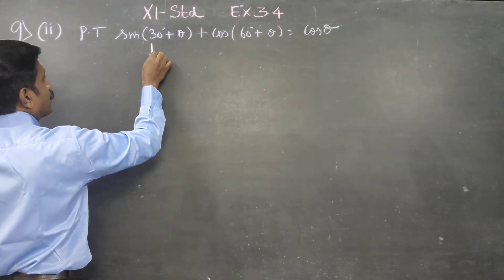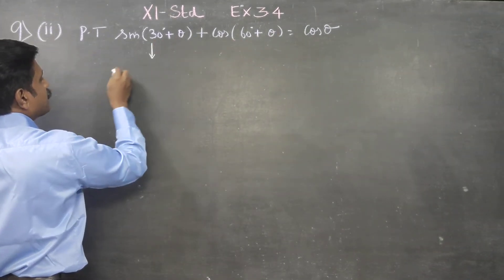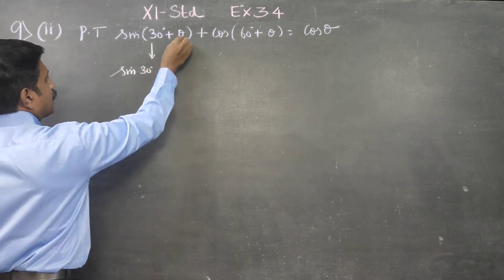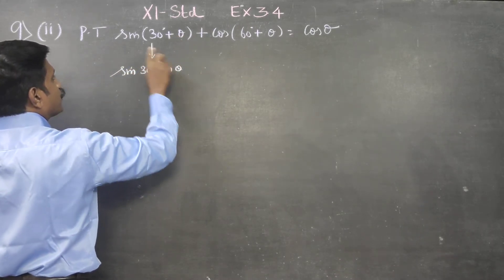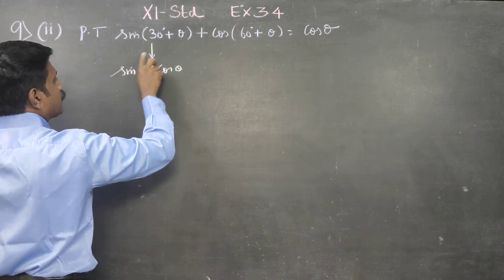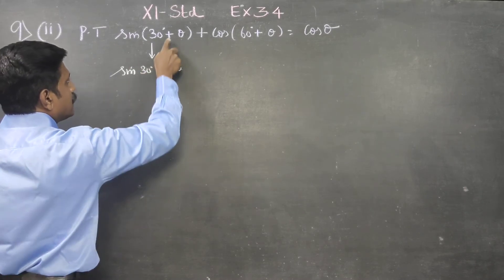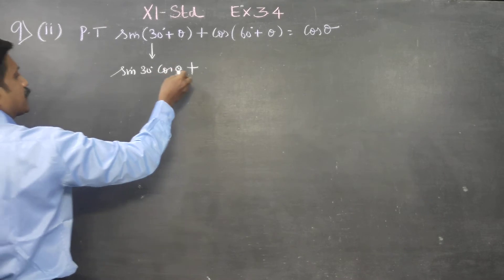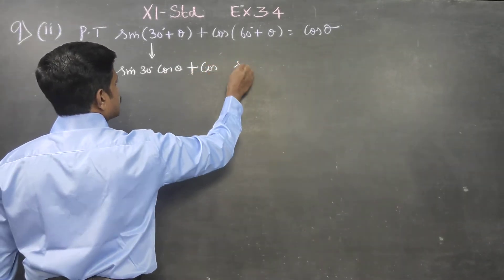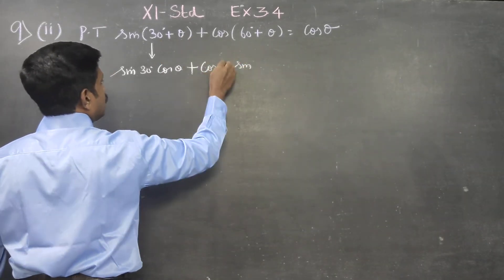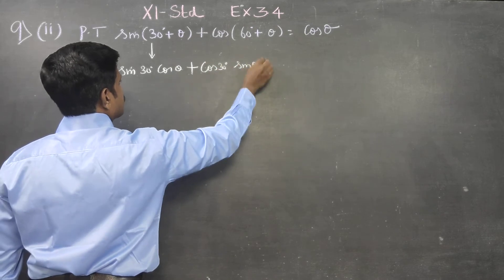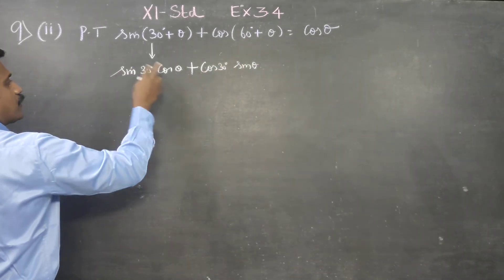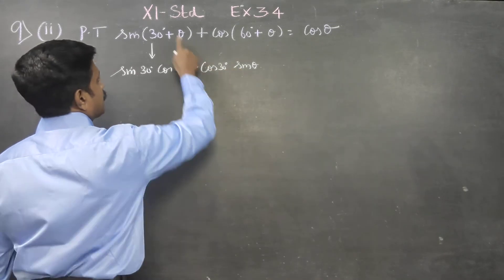I am just going to open this sin(a+b) formula. sin(a+b) = sin a cos b plus cos a sin b.